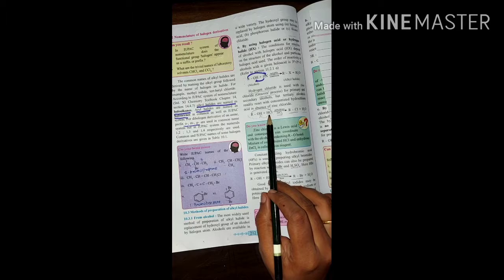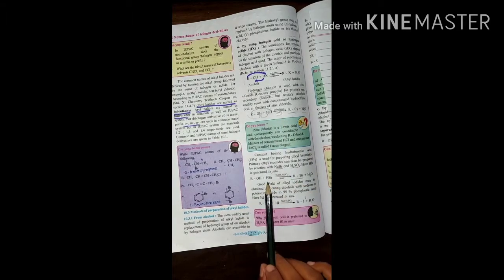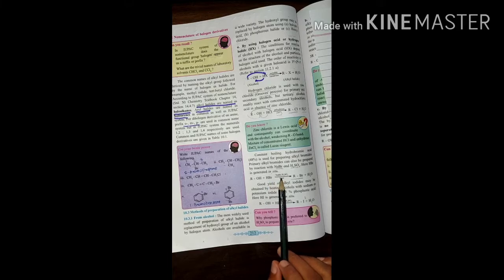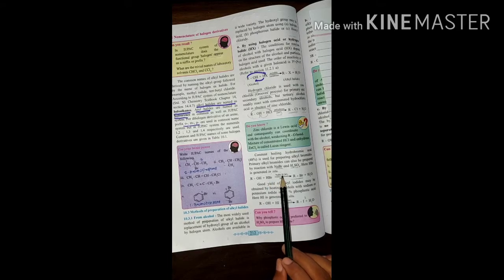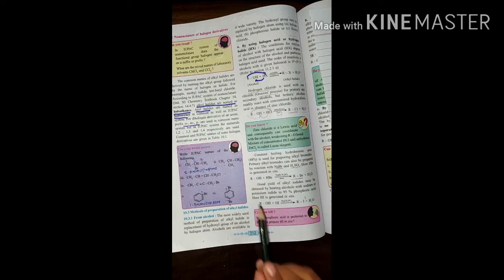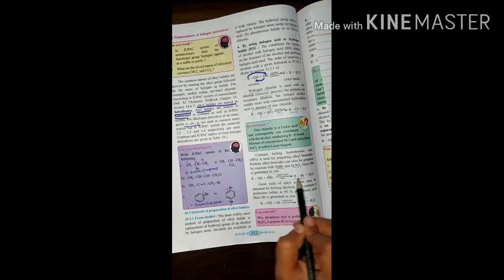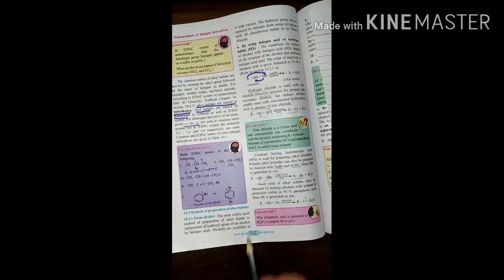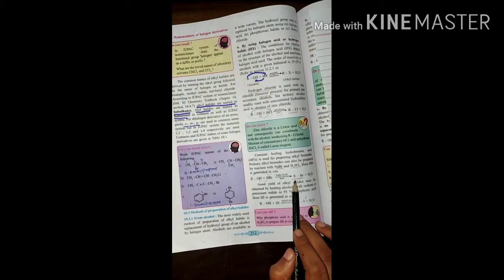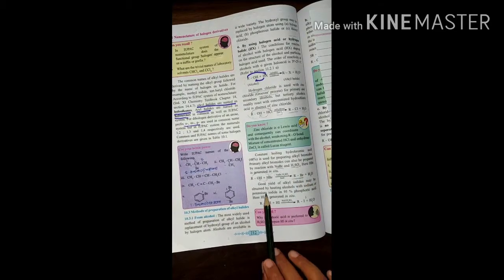If you use HCl with primary or secondary alcohols, use zinc chloride. If you're preparing bromides, the reagent will change to NaBr and H2SO4 with heating.